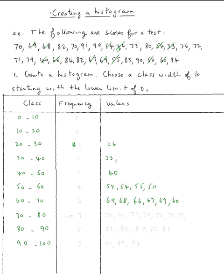Now the 70s, we have one 70, another 70, and then 73, 76, 72, 71, 79. And then 80s, we have 80, 80, 80. And then 90s, we have 91, 91, 99, and 94.